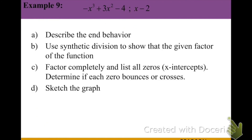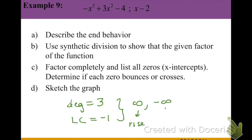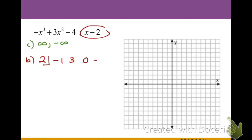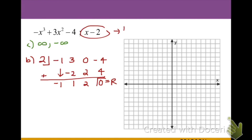For our next example, we start by finding the end behavior. Our degree is 3, which is odd, but we have a negative leading coefficient, so this means we flip our normal behavior and have a rise to the left and a fall to the right. We want to prove that the binomial x minus 2 is a factor. Setting up synthetic division — since it is of the form x plus or minus a constant — we bring down negative 1, multiply by 2 for negative 2, and continuing we get negative 4 plus 4, which adds to 0, proving x minus 2 is a factor.